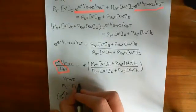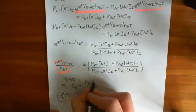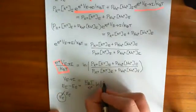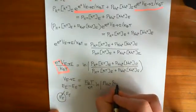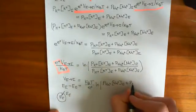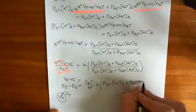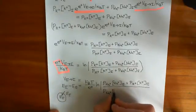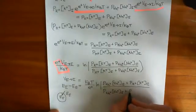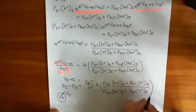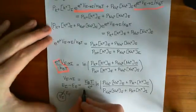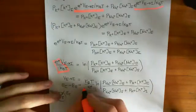This is equal to k_B T over the charge of the proton, times the natural logarithm of — and usually sodium comes first — the sodium permeability times the sodium concentration extracellularly, plus the potassium permeability times the potassium concentration extracellularly, over the sodium permeability times the sodium concentration intracellularly plus the permeability of potassium times the potassium concentration intracellularly. The natural logarithm term is now in its correct form.